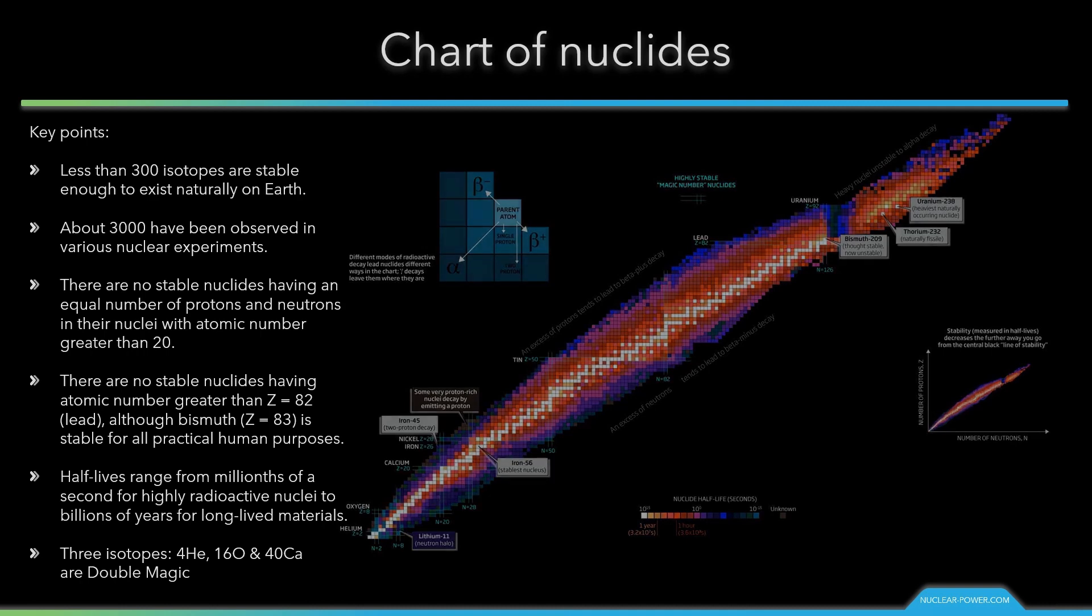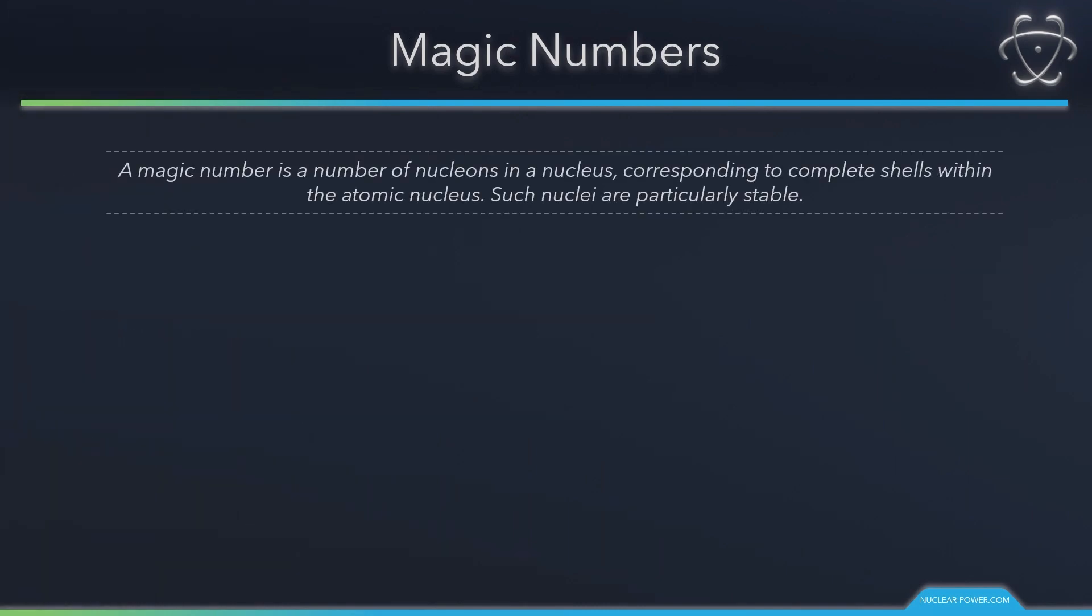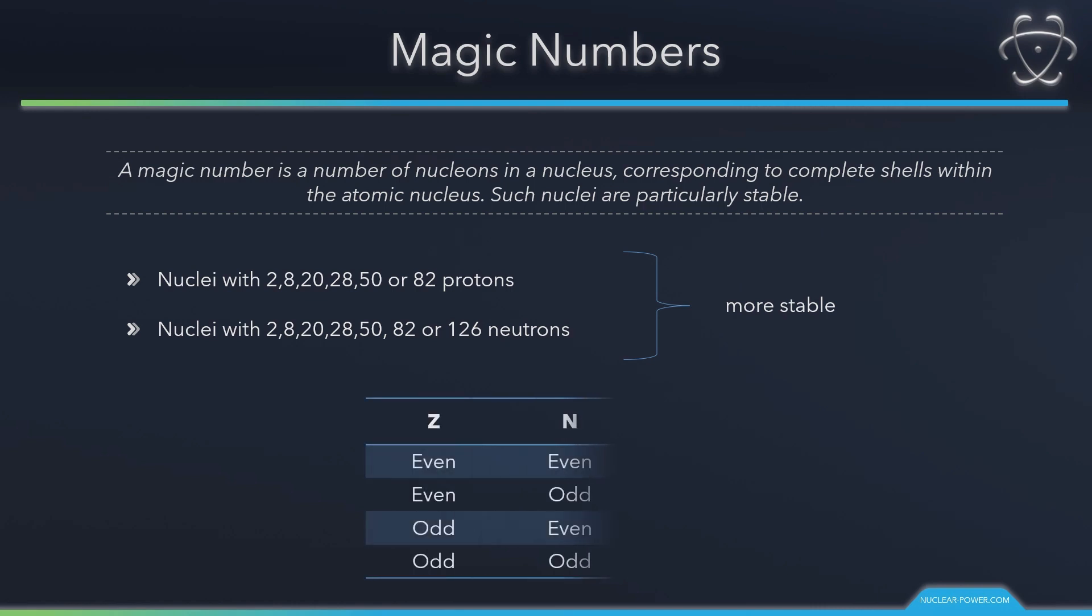What does it mean? A magic number is a number of nucleons in a nucleus corresponding to complete shells within the atomic nucleus. These nuclei have exceptional stability. One indication of this stability is the enhanced abundance of isotopes which have a magic number of neutrons or protons. Atomic nuclei consisting of such a magic number of nucleons have a higher average binding energy per nucleon than one would expect based upon predictions. They are hence more stable against nuclear decay. Magic numbers are predicted by the nuclear shell model.